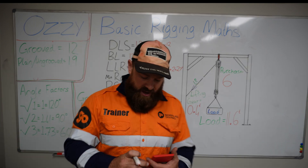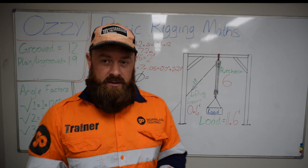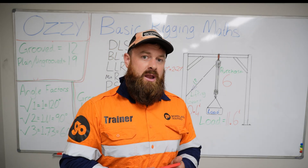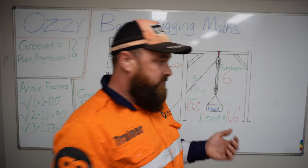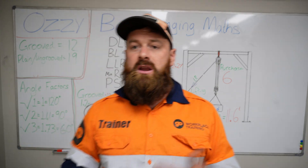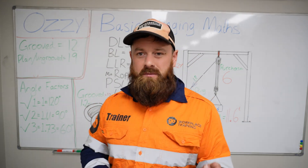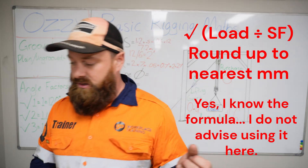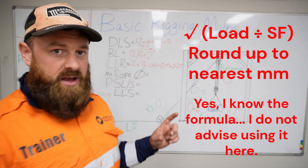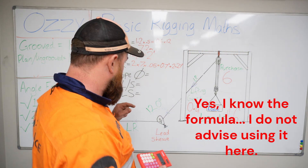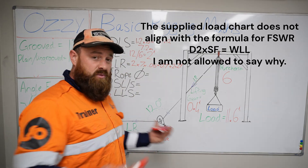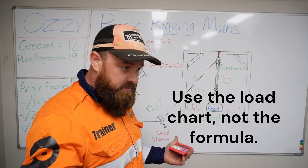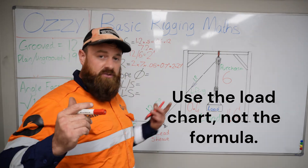Now we need to find out what our minimum rope diameter is. I'm going to get you to pause this screen right now and rewind if you need to. This is your load chart. You can work it out mathematically but I don't recommend it for this course. Use the load chart which you should have from your learner's guide to find out what the minimum rope diameter is.